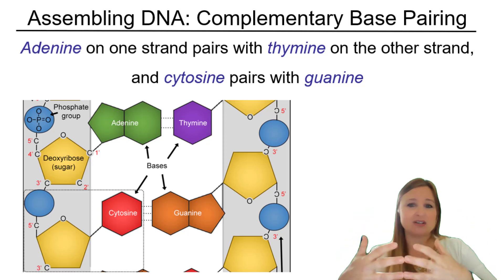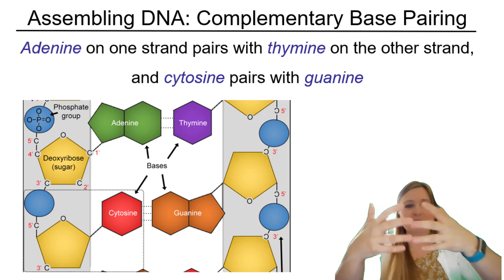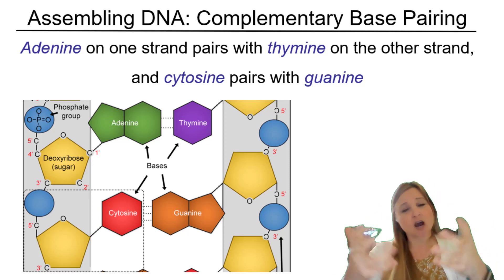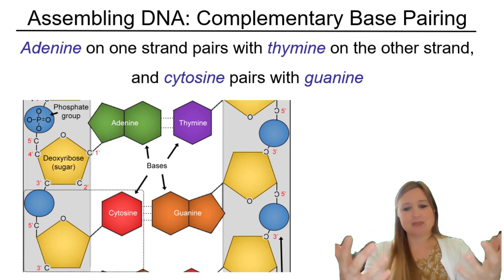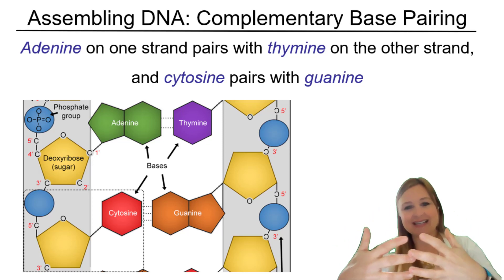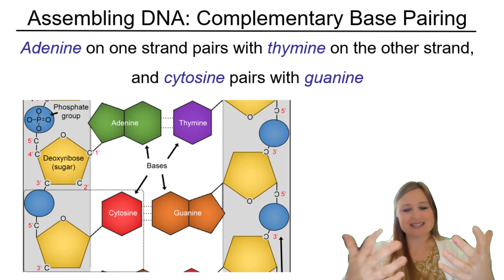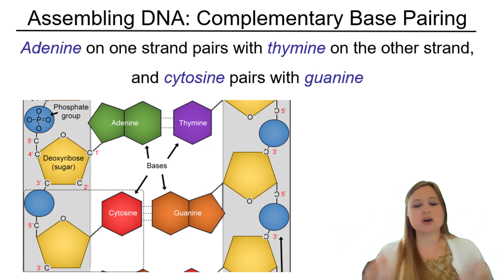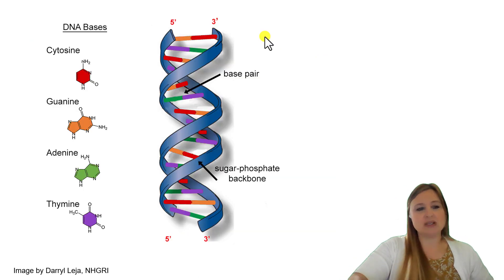You can think about it this way: 'complement' shares the same root as 'complete.' Adenine and thymine form a complementary base pair because they complete each other — one is a pyrimidine and one is a purine. So we call that complementary base pairing.